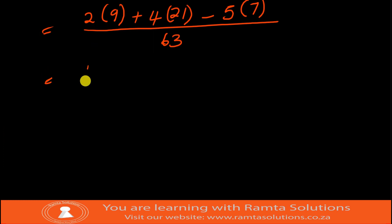So we will say 2 times 9 is 18, 4 times 21 is 84, 5 times 7 is 35 over 63. Again, remember we now use BODMAS - brackets, orders, division, multiplication, addition, and subtraction.